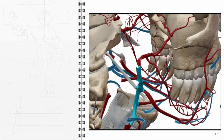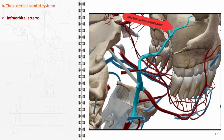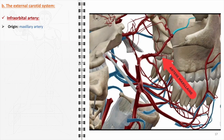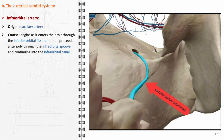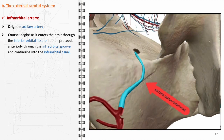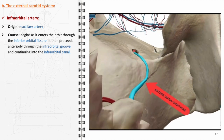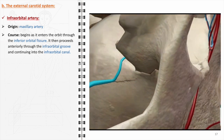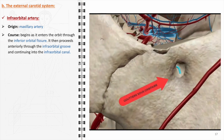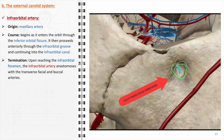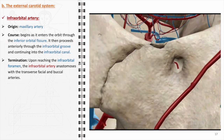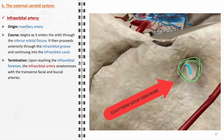The infraorbital artery, an important component of the external carotid system's contribution to the orbital blood supply, has its origin from the maxillary artery. The artery enters the orbit via the inferior orbital fissure, located between the greater wing of the sphenoid and the maxilla. After entering, it travels anteriorly along the infraorbital groove, then proceeds into the infraorbital canal within the maxilla, and eventually emerges onto the face through the infraorbital foramen just below the eye, terminating by anastomosing with the transverse facial and buccal arteries.